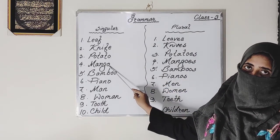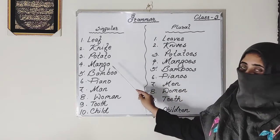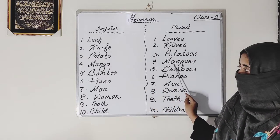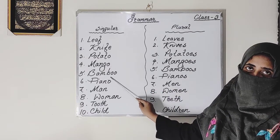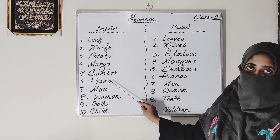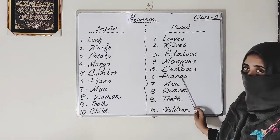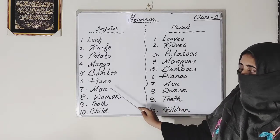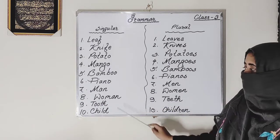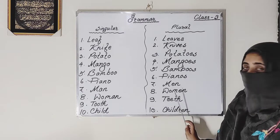Singular: potato — plural: potatoes. Singular: mango — plural: mangoes. Singular: bamboo — plural: bamboos. Singular: piano — plural: pianos. Singular: man — plural: men. Singular: woman — plural: women.